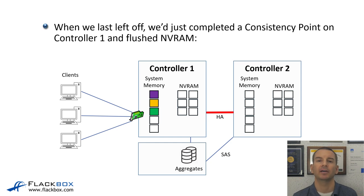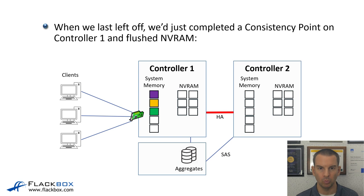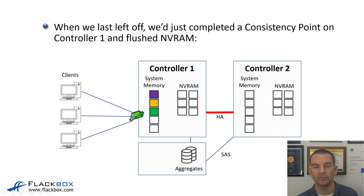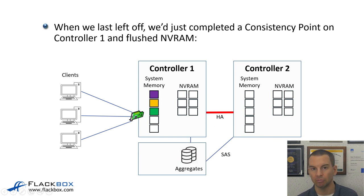Going back to our example: when we last left off, we had just completed a consistency point on Controller 1, written the data to disk, and flushed the contents of NVRAM. Notice that it's NVRAM that gets flushed and emptied, but we still have the contents of system memory. That's important because system memory is going to be used as a cache to improve read performance.